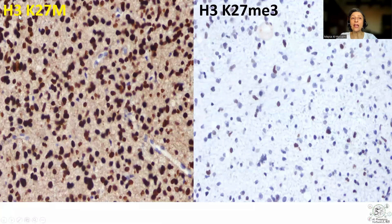These are the H3K27M — what I call the capital M — and the H3K27ME3. The combination of these two stains would support the diagnosis of diffuse midline glioma, but they are interpreted in a completely different way.